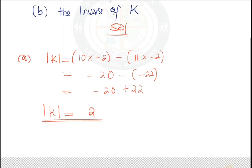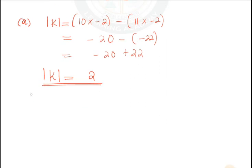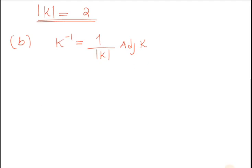Then part B says find the inverse of K. So how do we find the inverse? The inverse of K denoted by K^(-1) is just equal to 1 over the determinant of K multiplied by the adjoint of K.